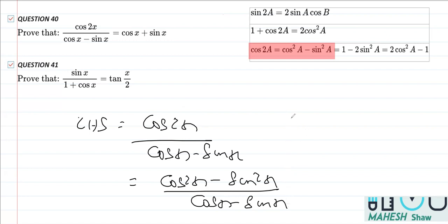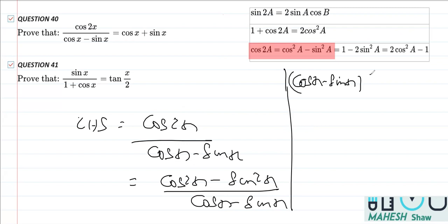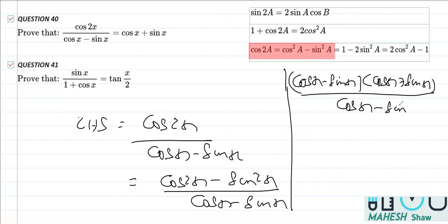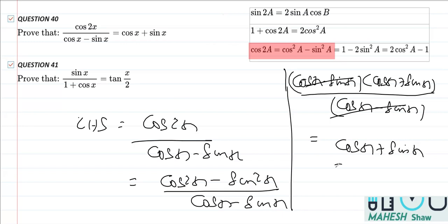Now I can write cos squared x minus sin squared x by applying the identity a squared minus b squared equals a plus b times a minus b. That means I can write cos x minus sin x multiplied by cos x plus sin x, divided by cos x minus sin x. We see that cos x minus sin x gets cancelled, and what we are left with is cos x plus sin x, which equals the RHS — what we had to prove.